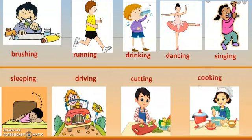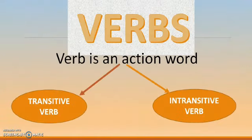So children, you have seen these pictures. In all these pictures, these children are doing something — some action is going on. Somebody is running, somebody is singing, somebody is dancing. So what is a verb? A verb is an action word.